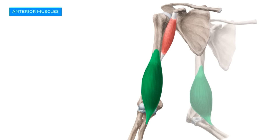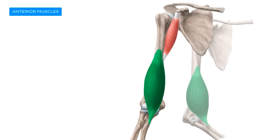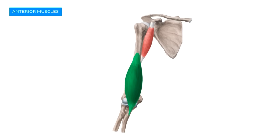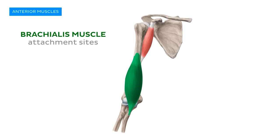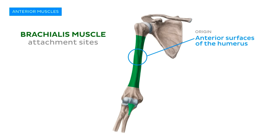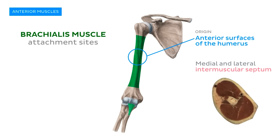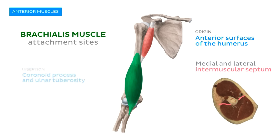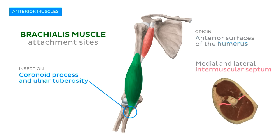The second member of the anterior group is the brachialis muscle. The brachialis originates from the distal half of the anterior surfaces of the humerus and also the medial and lateral intermuscular septum. In contrast to the biceps brachii, the brachialis has its insertion or distal attachment on the ulna, specifically onto its coronoid process and ulnar tuberosity.